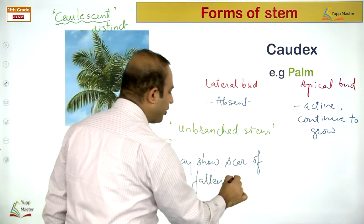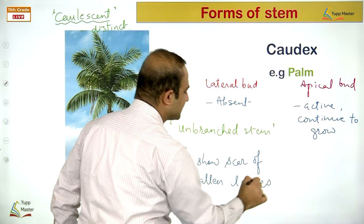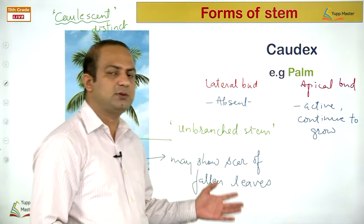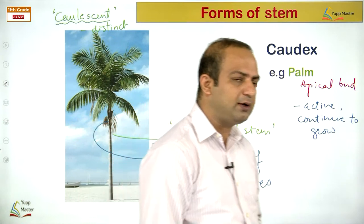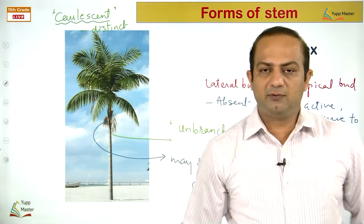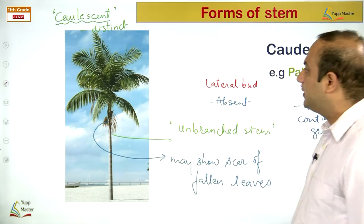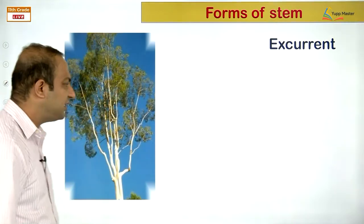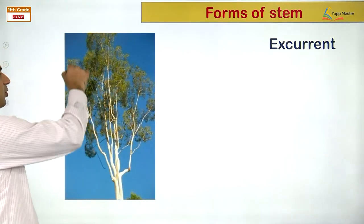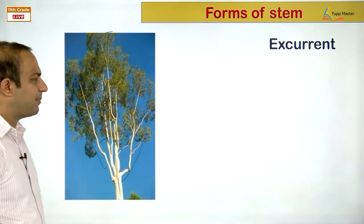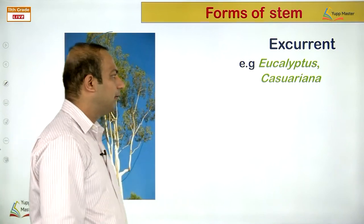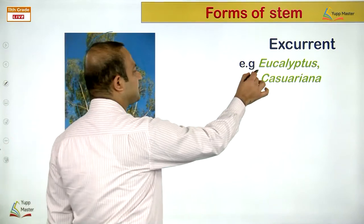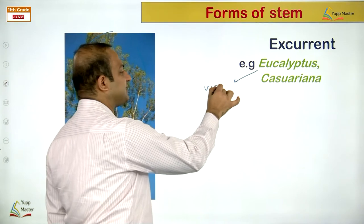Hook climbers are another type — in bougainvillea, the thorn becomes slightly bent forming a hook. This is also seen in Carissa, Duranta, and Bignonia. Root-led climbers use climbing roots to climb the mechanical support — examples include Piper (betel) and Pothos. Twinners lack any organ for climbing — the entire plant twines itself around the mechanical support.